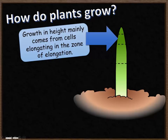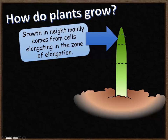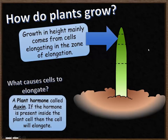So how do plants grow? The growth in height of a plant mainly comes from cells elongating in the zone of elongation. Growth in humans and animals comes from cells duplicating — more cells means growing taller. In plants, though, the growth in height mainly comes from the cells getting bigger and stretching out.